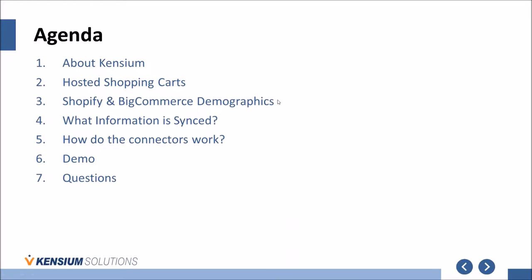In terms of agenda, we'll briefly go through the About Kensium slide at a very high-level overview. We'd like to spend a little bit of time explaining hosted shopping carts, which is what Shopify and BigCommerce are. We'll briefly talk about the advantages and disadvantages of the hosted shopping cart and how it differs from the preferred platform that Acumatica has with Magento. We'll also talk about the demographics in terms of people that would use Shopify and BigCommerce.